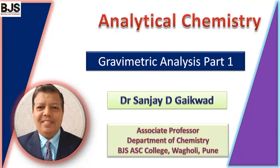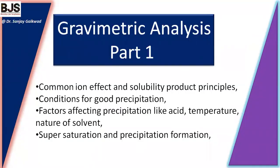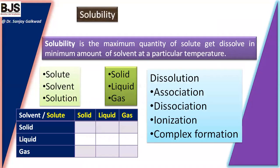Gravimetric analysis is one of the quantitative analytical methods and it is most important in analytical chemistry. In this video we are going to see gravimetric analysis part one, covering the common ion effect, solubility product, its principle, conditions for good precipitation, factors affecting precipitation like acid, temperature, nature of solvent, super saturation, and precipitation formation.